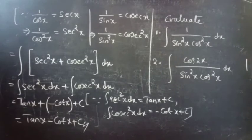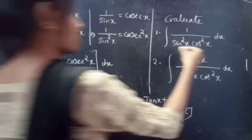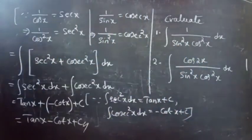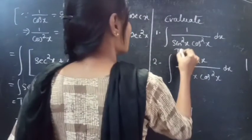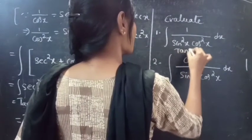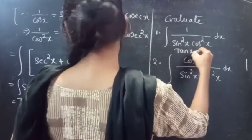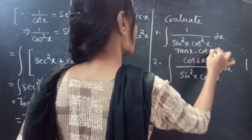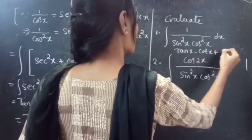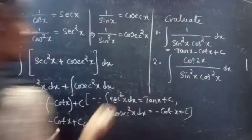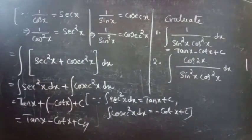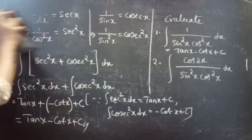Therefore, the integral of 1/(sin²x · cos²x) dx equals tan x - cot x + c. Now coming to the second problem.